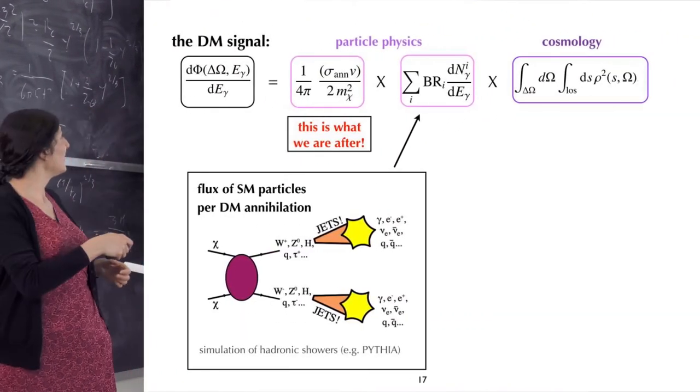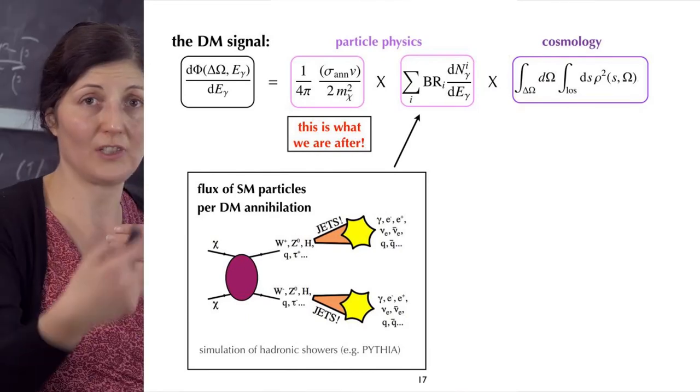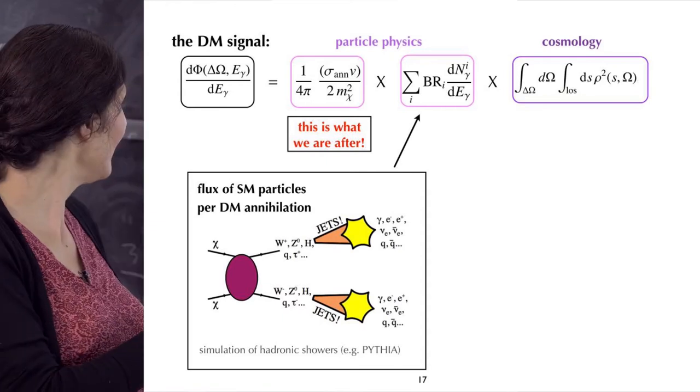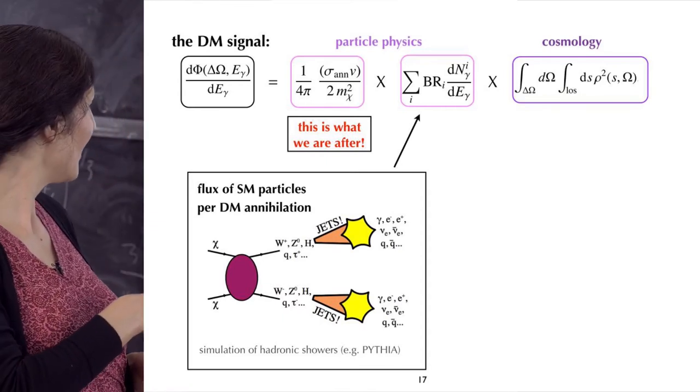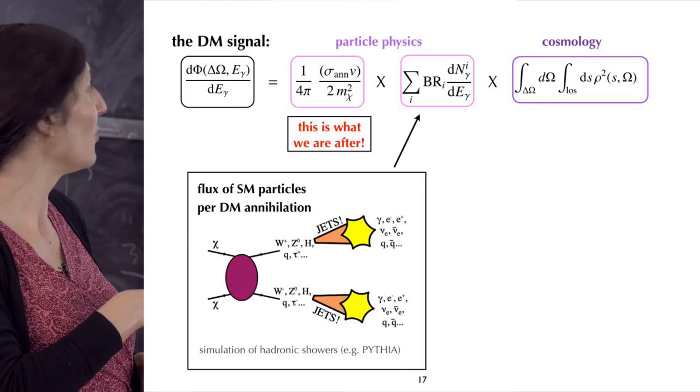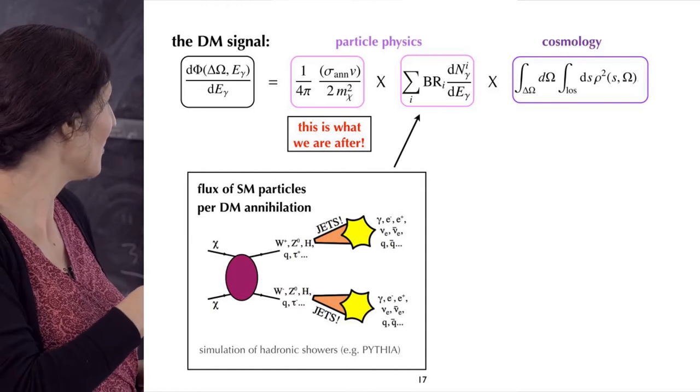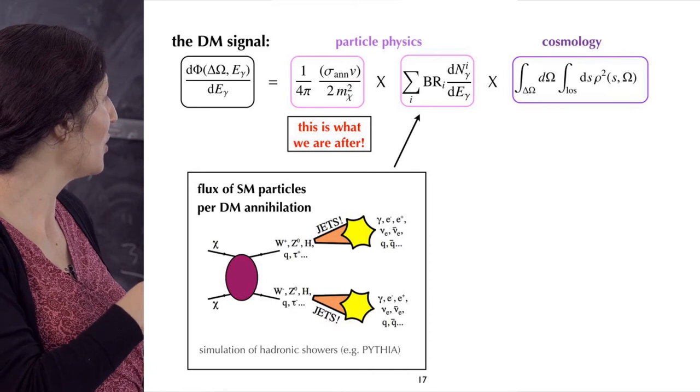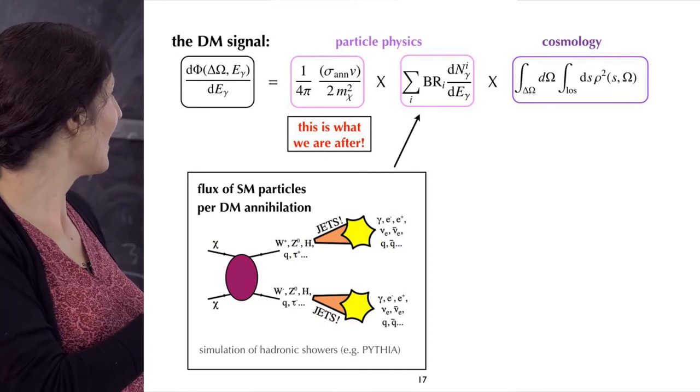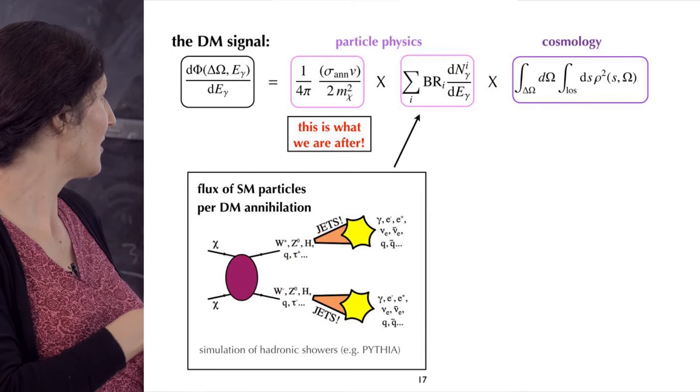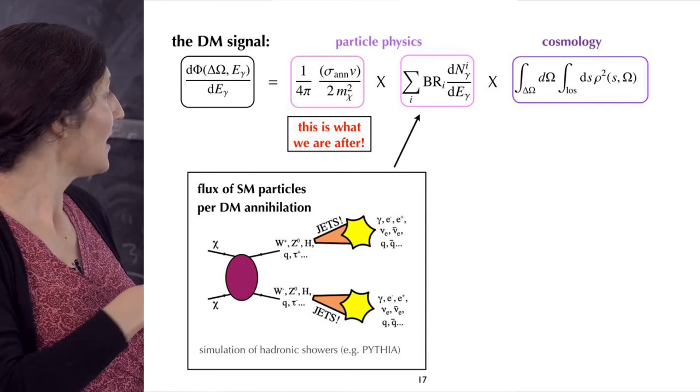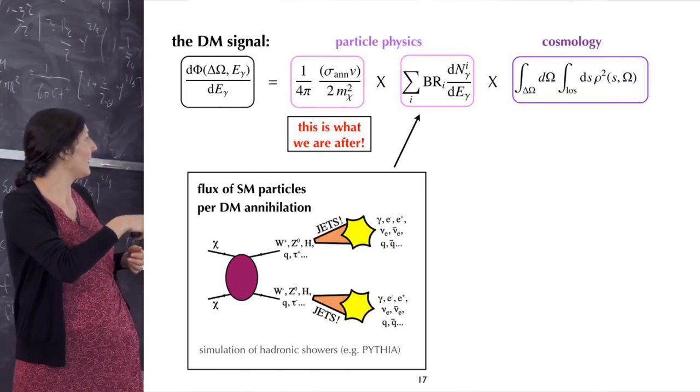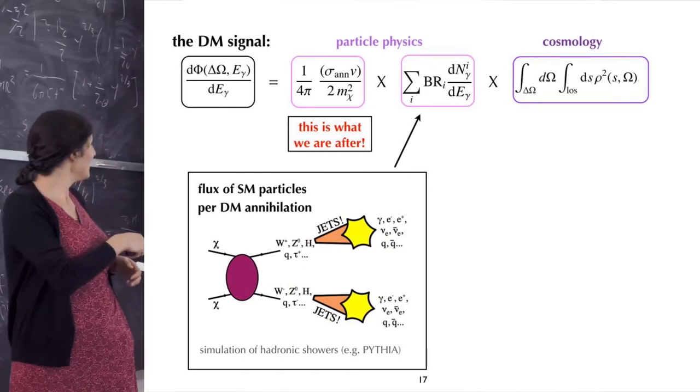For example, if one thinks about the spectrum, what is the energy distribution of photons as a product of two dark matter particles annihilating? Two dark matter particles annihilate. We do not know the physics here. This is what we want to learn. But independently on that, we hope that it will produce some of the standard model particles, like gauge bosons, quarks, leptons. Gauge bosons and quarks will produce jets, which would then produce pions, and pions will annihilate to photons.